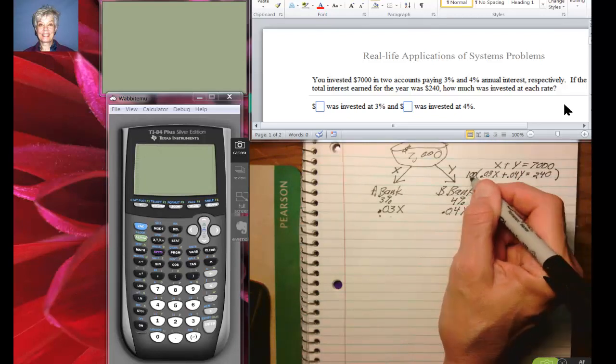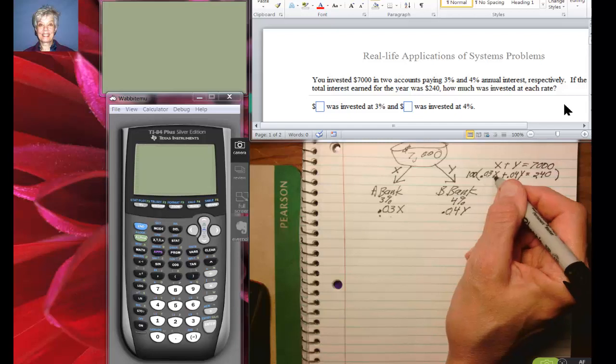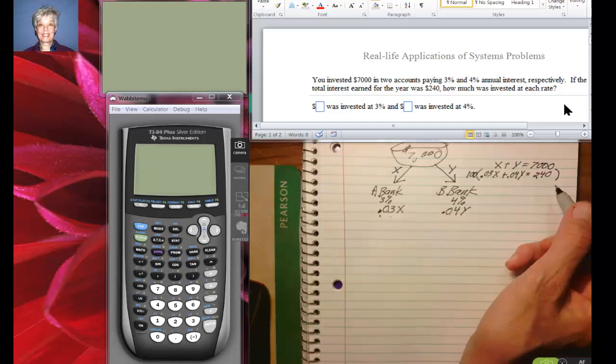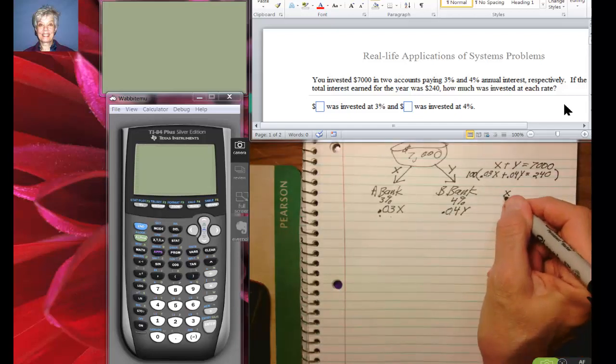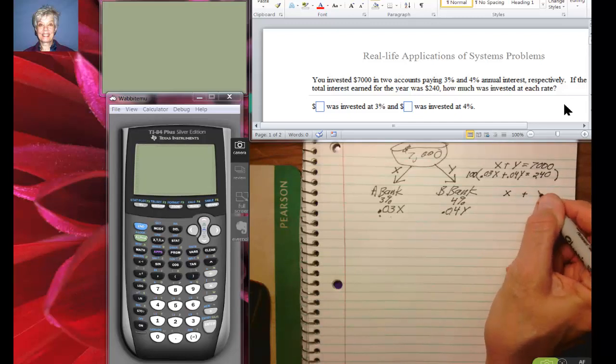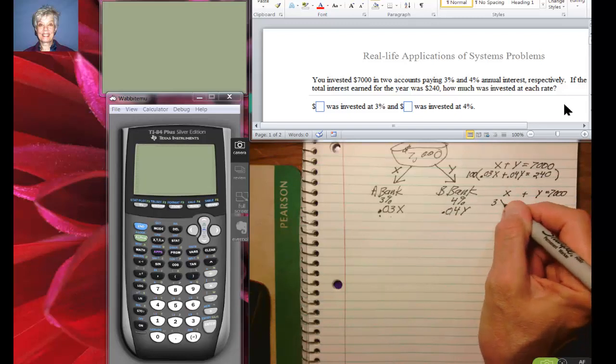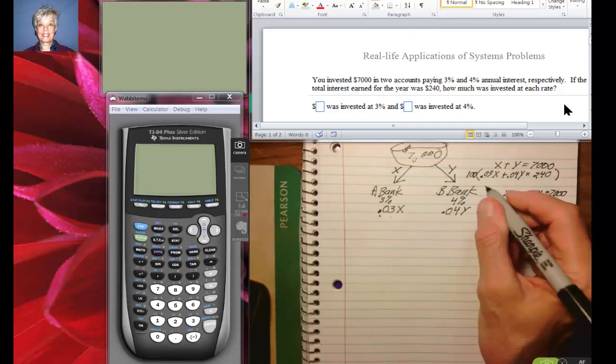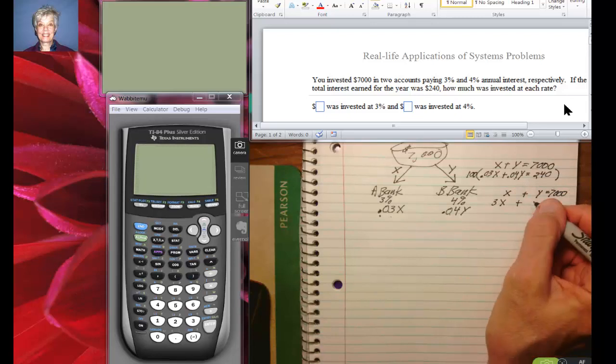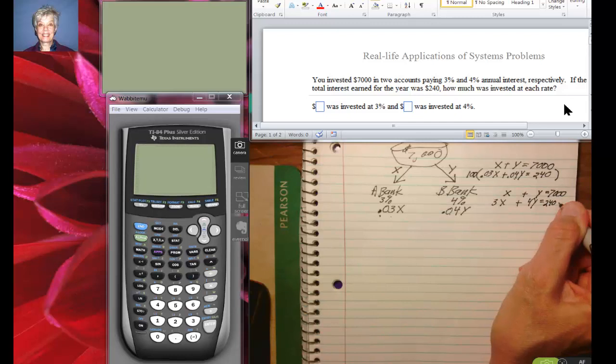All right, so let's go ahead and change this to X plus Y equals 7,000, and now 100 times 0.03 will be 3X, and 100 times 0.04Y is going to be 4Y, and 100 times 240 is going to be a big number - 240 with an additional two zeros.